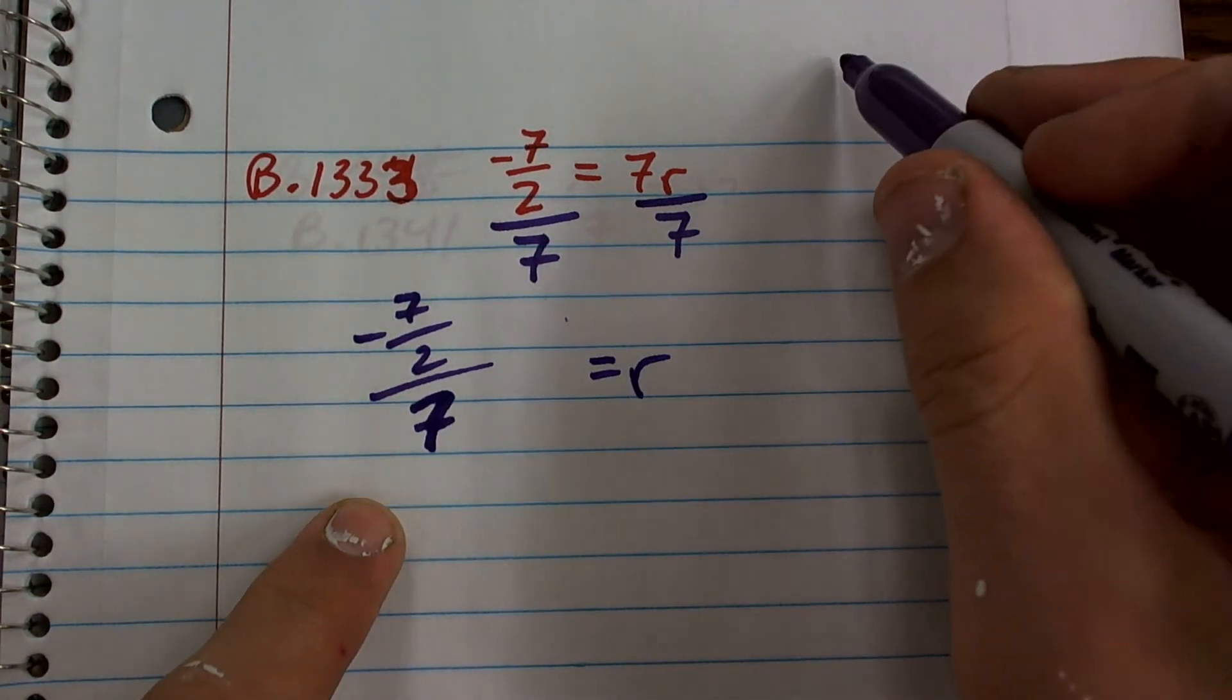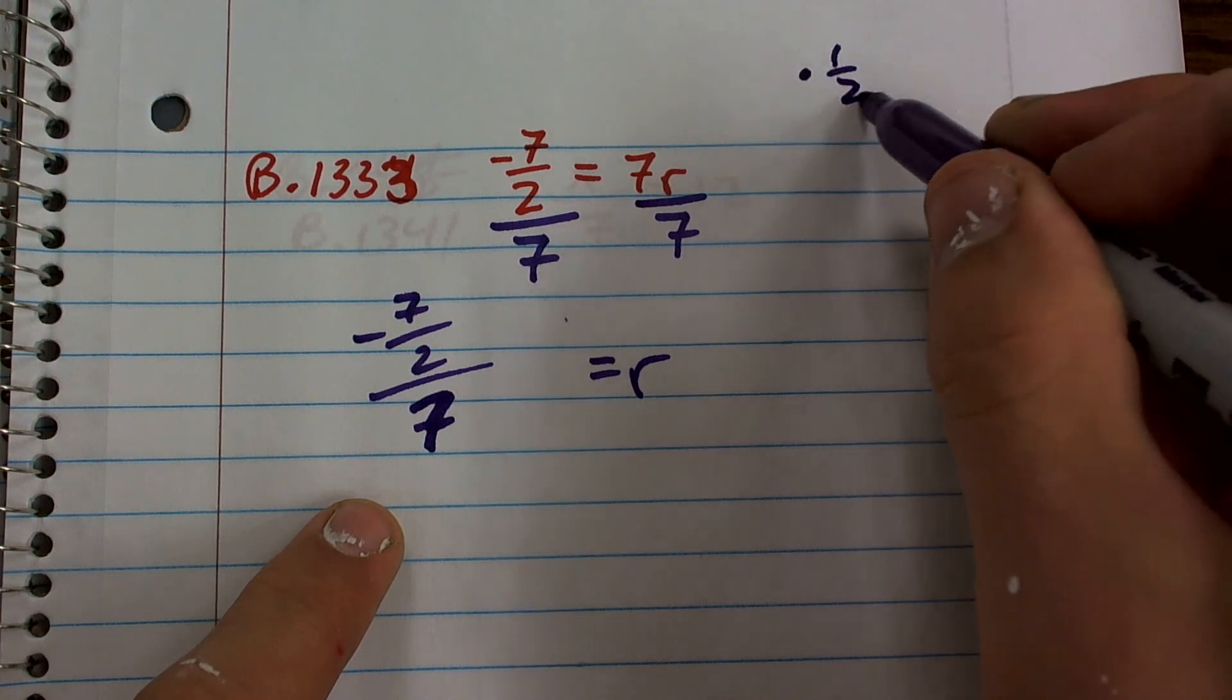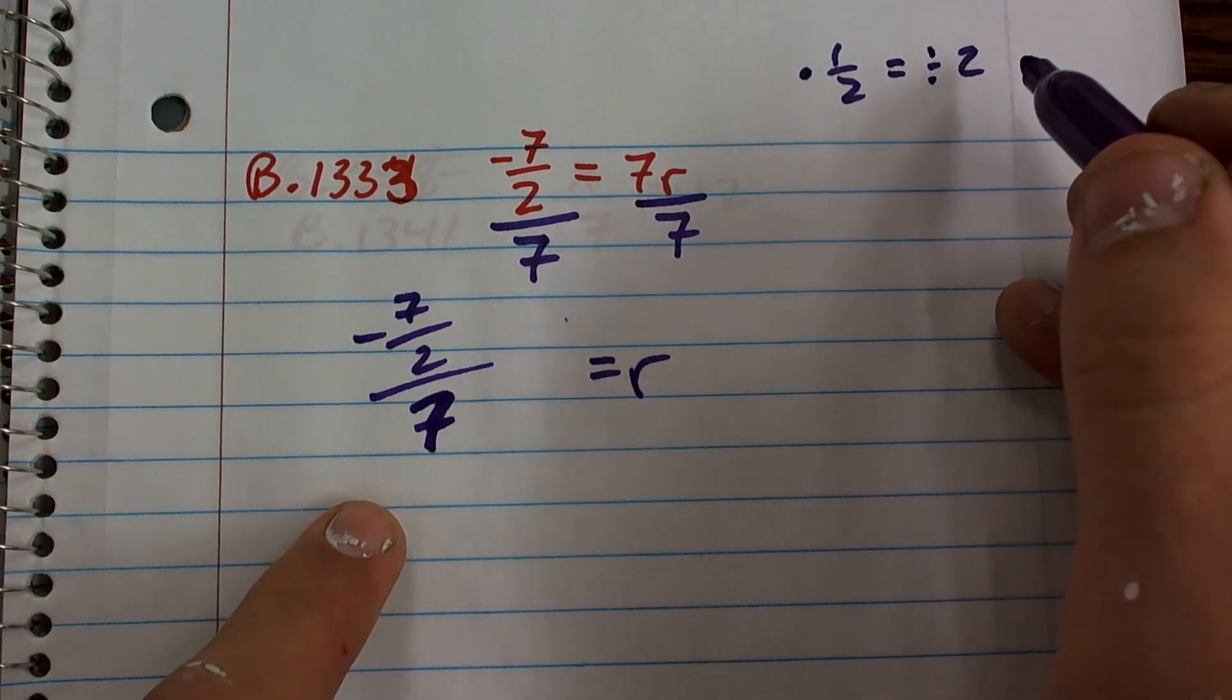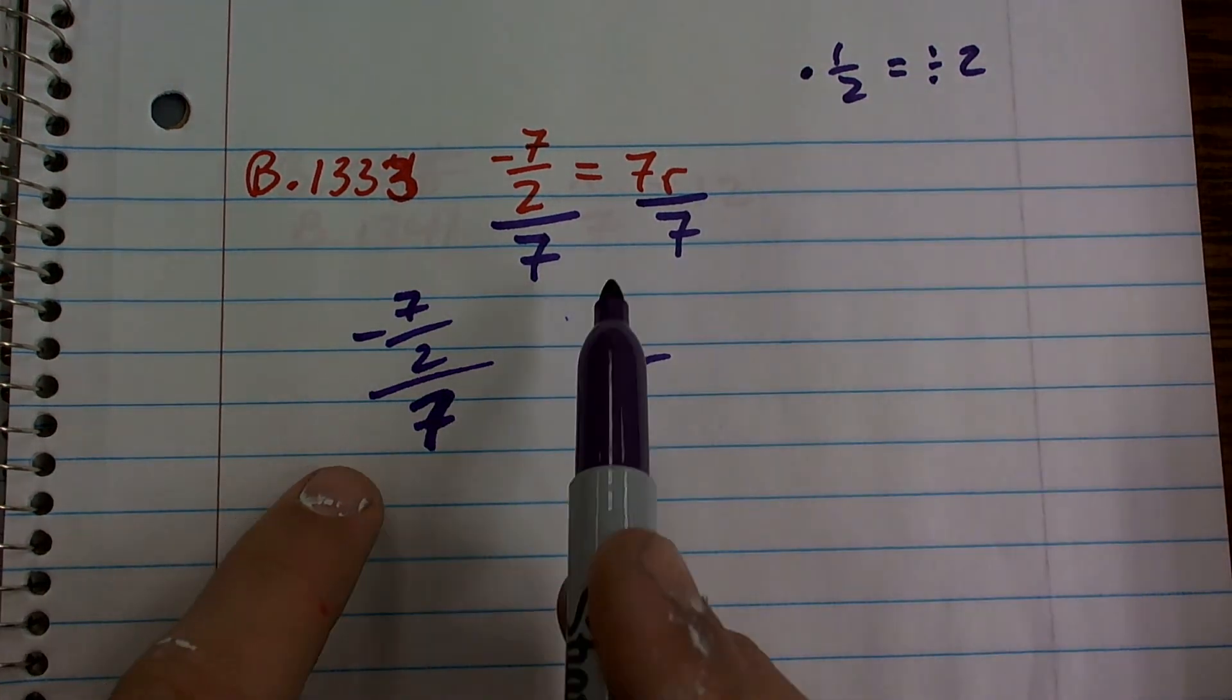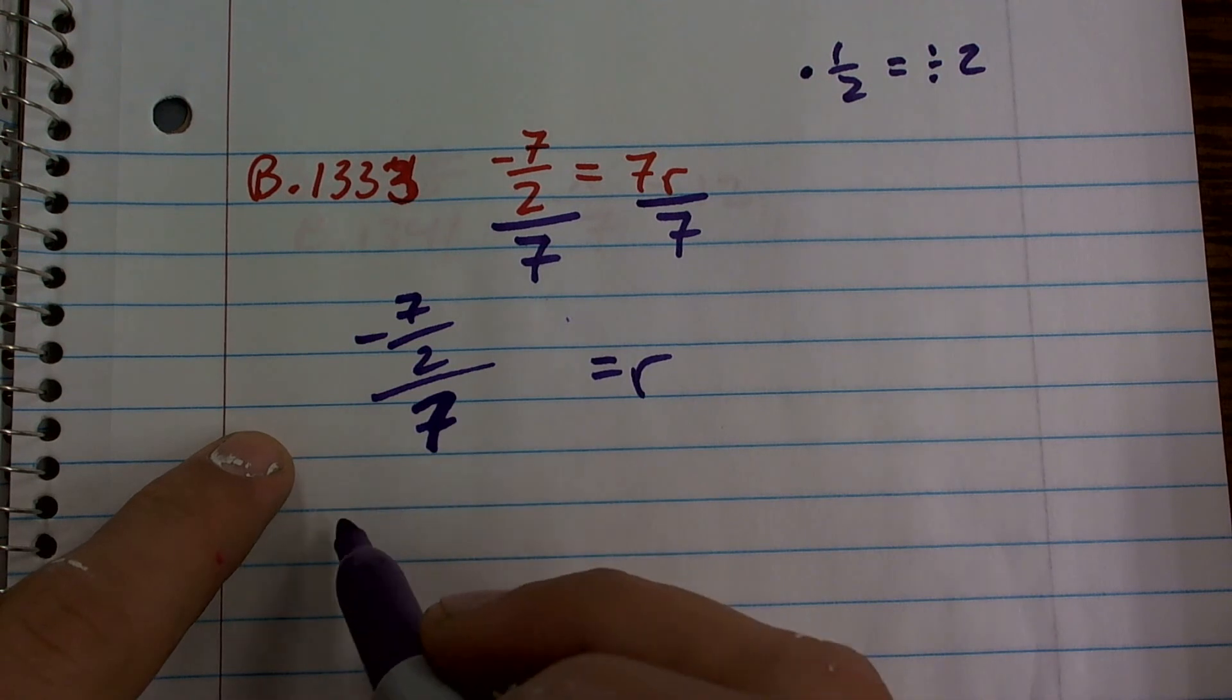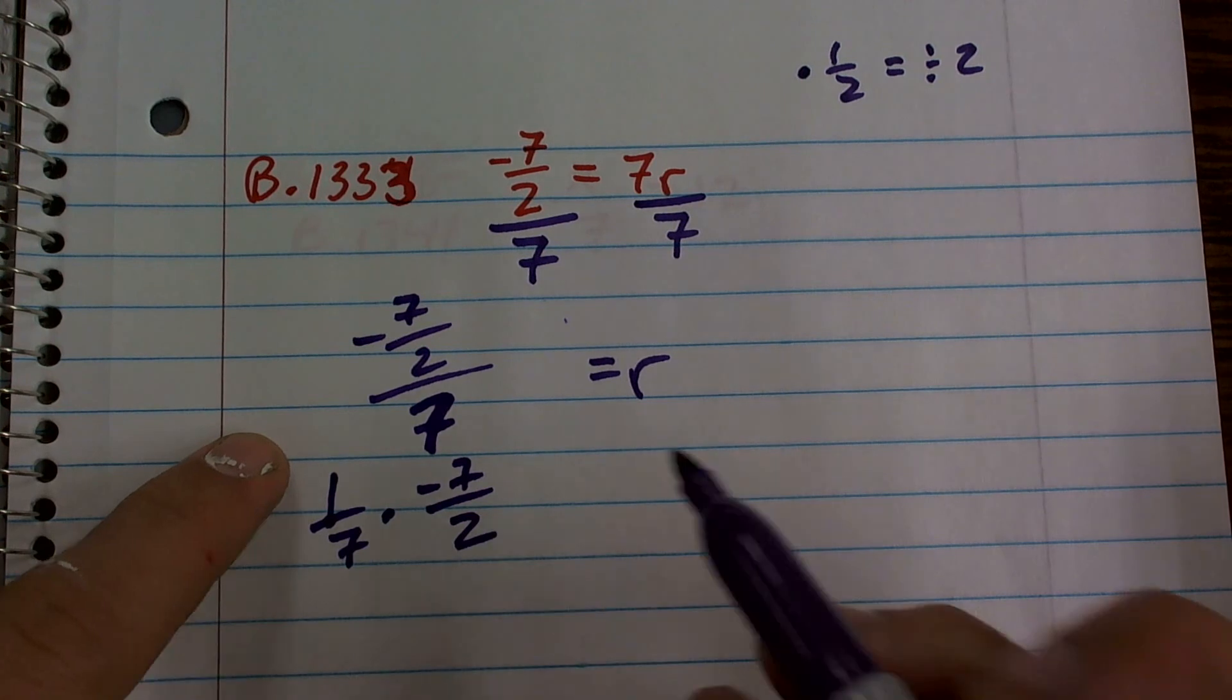One thing is, if you remember, multiplying by 1 half is the same thing as dividing by 2, right? Those are equal operations. So instead of dividing by 7, why don't I just rewrite it as 1 seventh times negative 7 over 2?